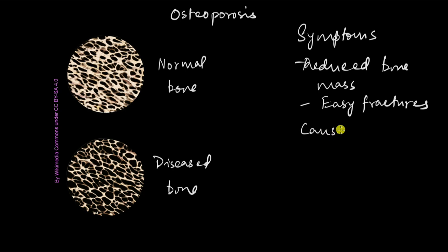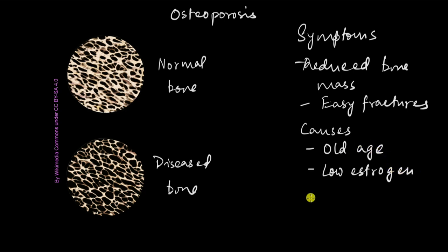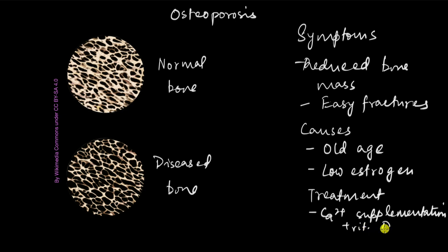One cause of osteoporosis is old age: bone is broken down quicker than it can be reformed. A second cause is low estrogen in women, which often happens after menopause. Treatment includes calcium supplementation, vitamin D, and hormone replacement therapy, often done in older women who have undergone menopause so they have enough estrogen. Osteoporosis is not only a disease of older women — it also affects older men, although at a greater age. Nevertheless, older men should also take enough calcium so their bones are not brittle.